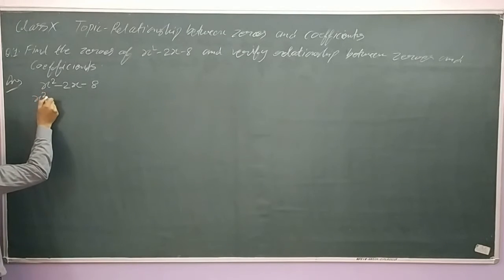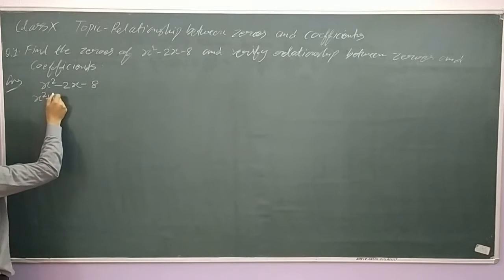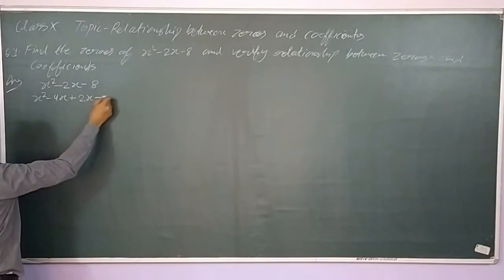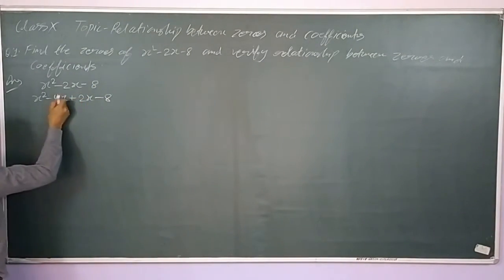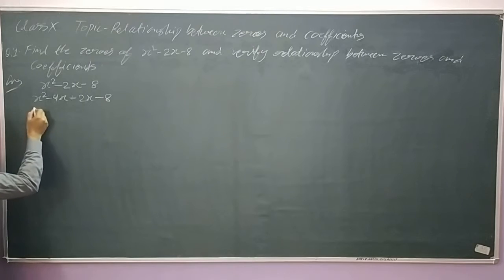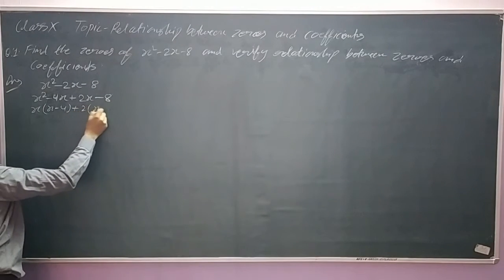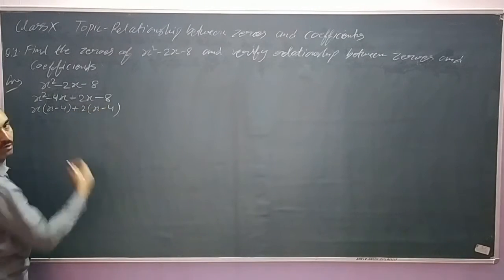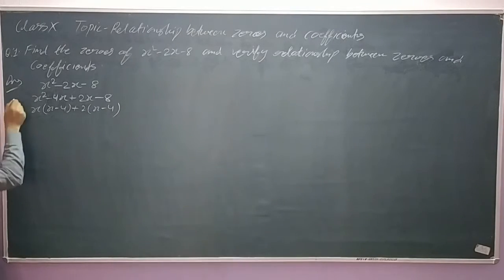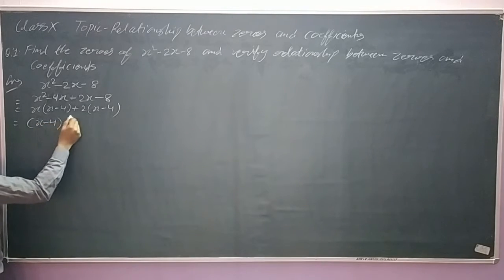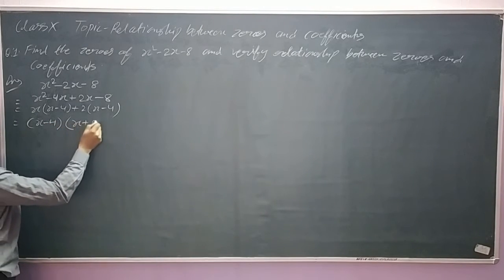So x squared minus 2x minus 8 — we split the middle term: x squared minus 4x plus 2x minus 8. Taking x common gives x(x minus 4), and taking 2 common gives 2(x minus 4). So x minus 4 is the common factor, and the remaining factor is x plus 2.